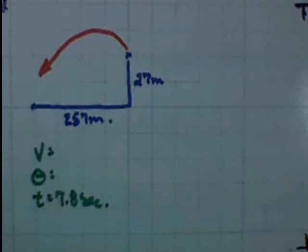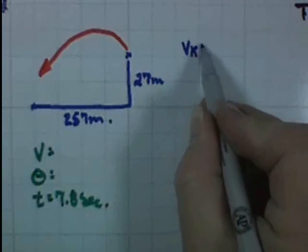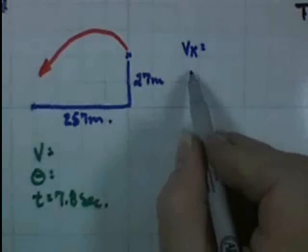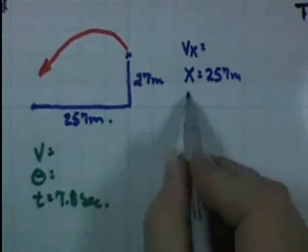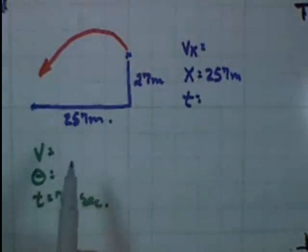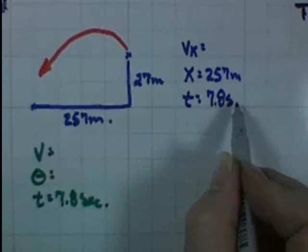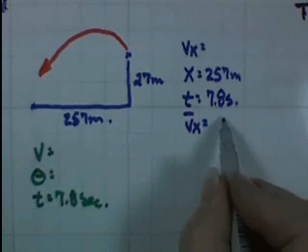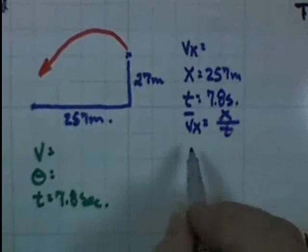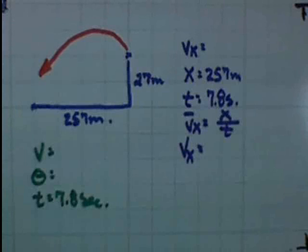So now what can I do? Let's take it one step at a time. The velocity in the x-axis will be simple. We know the distance in the x-axis: 257 meters. We know the time it travels in the x-axis — it's going to be the total time in the air, 7.8 seconds. So we can find the average velocity in the x-axis, simply distance over time. The average velocity in the x-axis is 257 meters divided by 7.8 seconds. Plug it into your calculators and find out what you get.